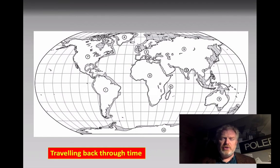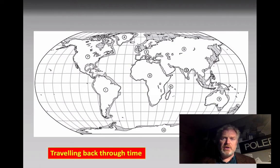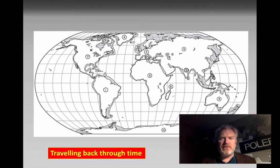If you've watched the introductory video, you'll know that the map of the world we see now isn't as the world has always been. Continents have grown over time and have been moving around the Earth's surface because of plate tectonics for thousands of millions of years. What we're seeing now is like a freeze frame in a film.